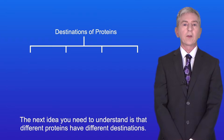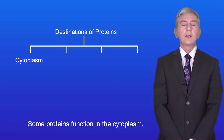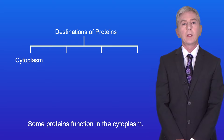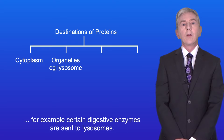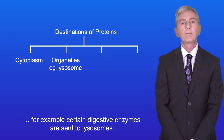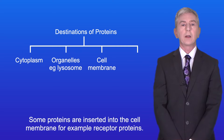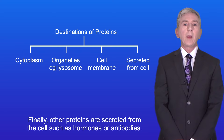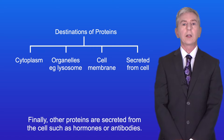The next idea you need to understand is that different proteins have different destinations. Some proteins function in the cytoplasm. Other proteins are sent to different organelles — for example, certain digestive enzymes are sent to lysosomes. Some proteins are inserted into the cell membrane, for example receptor proteins. And finally, other proteins are secreted from the cell, such as hormones or antibodies.